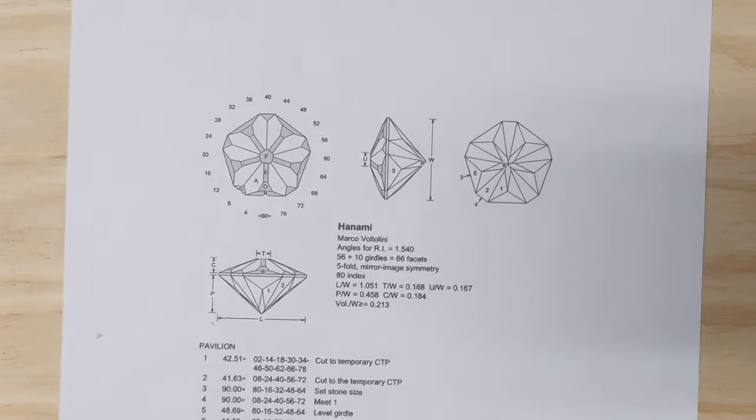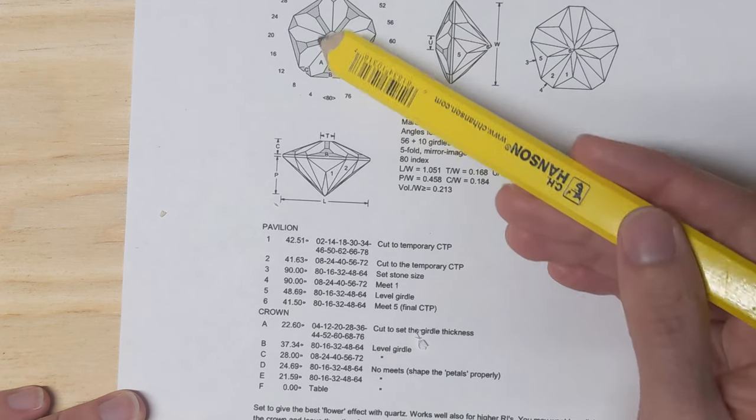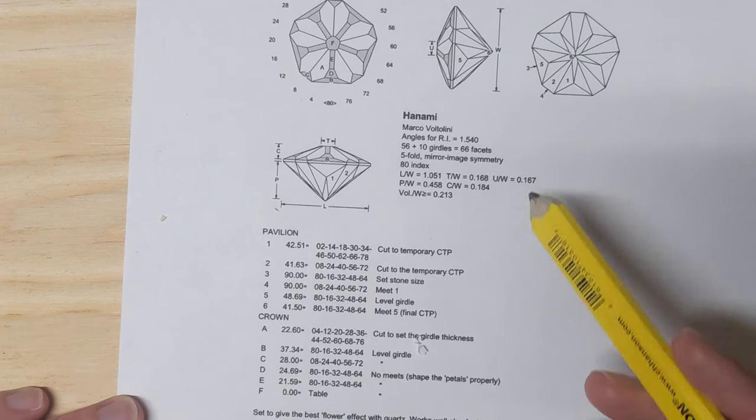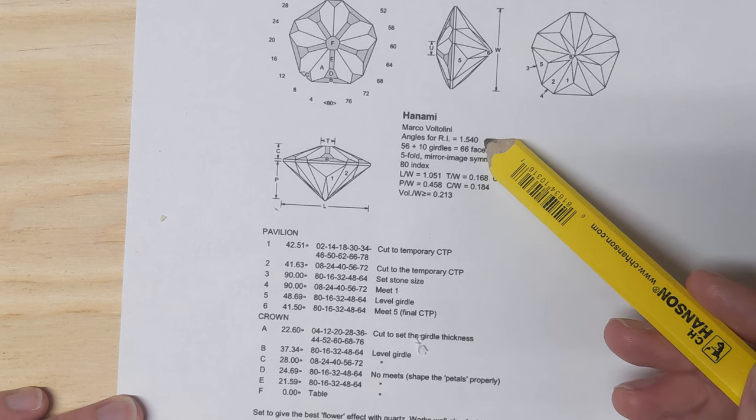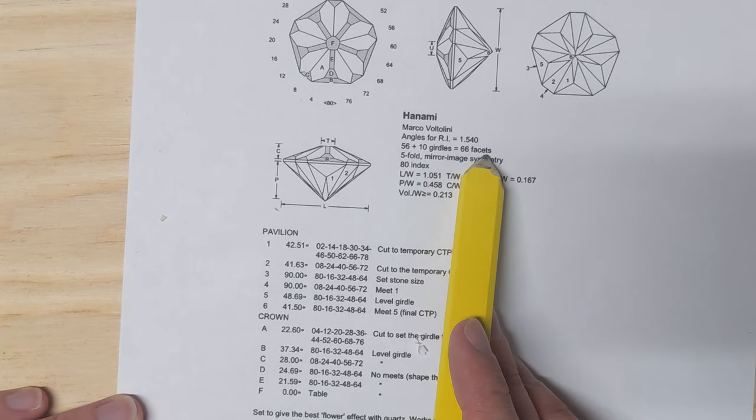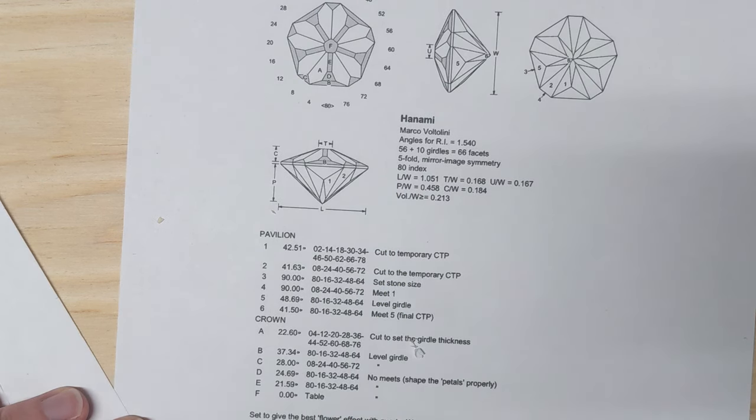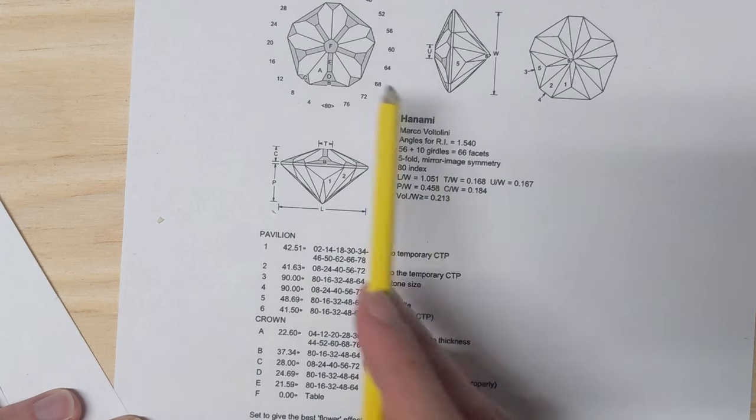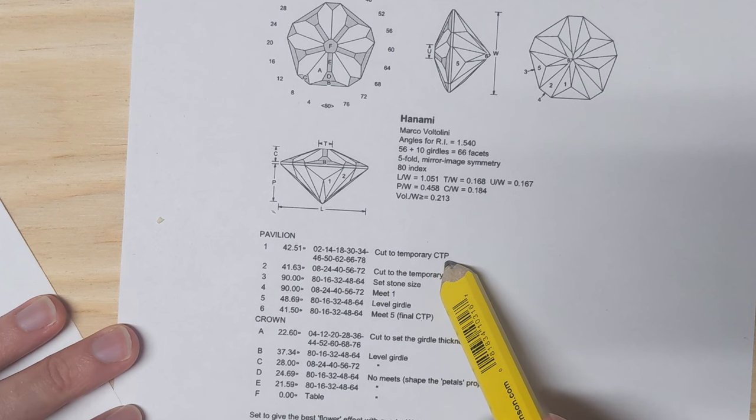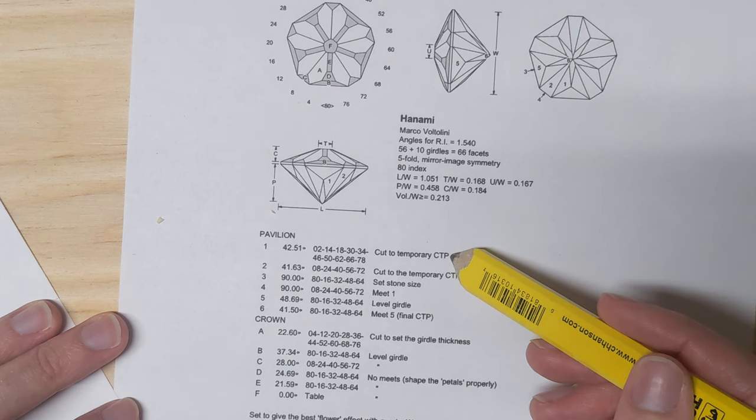More complicated designs have more complicated diagrams. This one I'm really interested in doing is called Hanami, which kind of looks like a flower, by Marco Voltolini, who has a lot of very interesting diagrams that are freely available online. It's made for refractive index of 1.54, which is quartz basically, and has 56 facets and 10 girdles, or 66 facets total. It's a five-fold mirror image symmetry. This one has a few more steps in it than the other two diagrams. We have the crown, pavilion, two side views, cut to temporary CTP. CTP is center point. It's just simpler to write CTP, I guess.